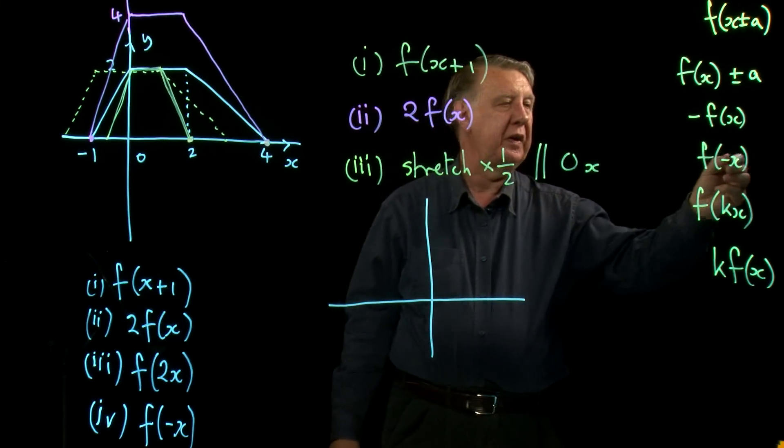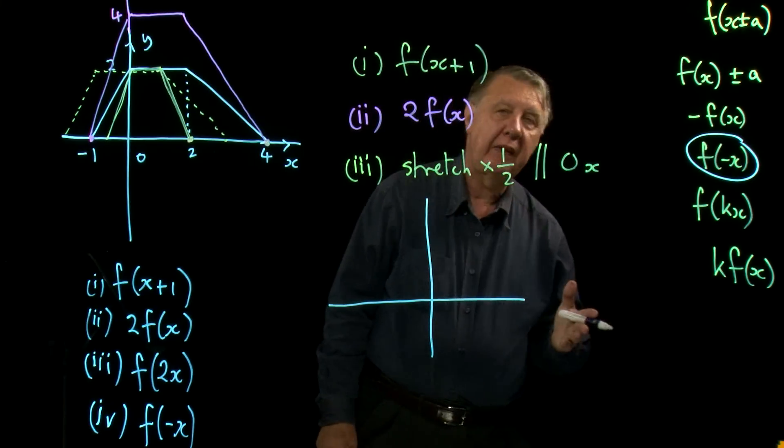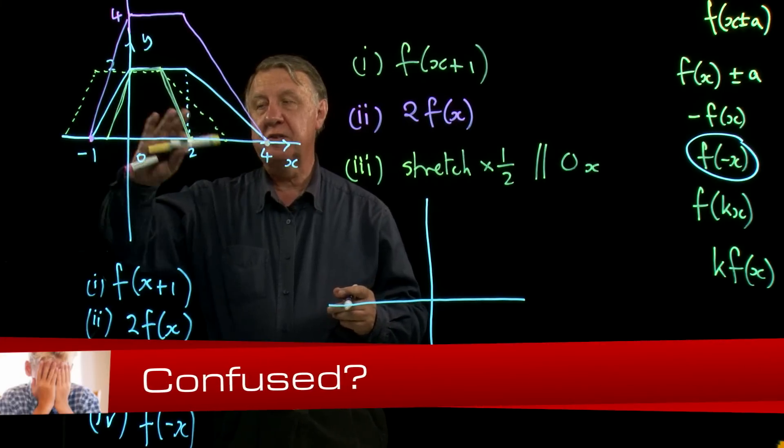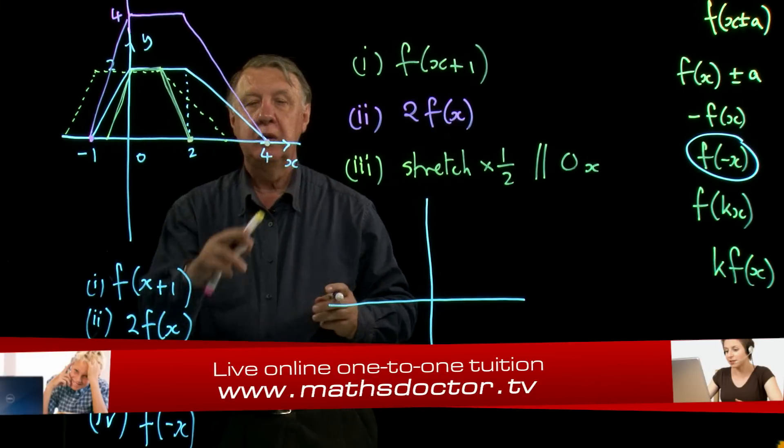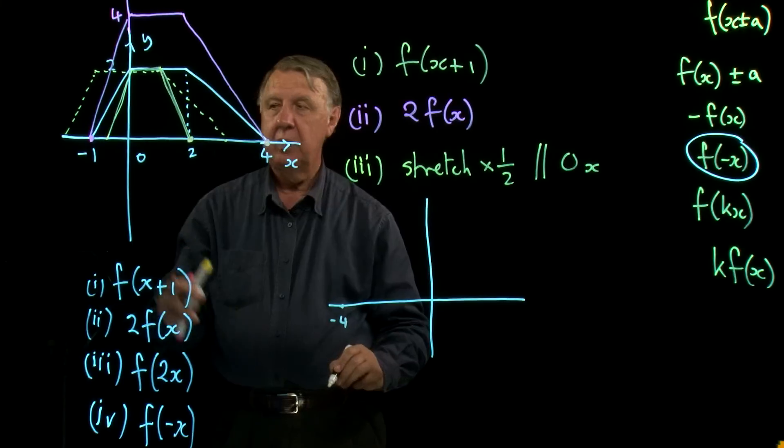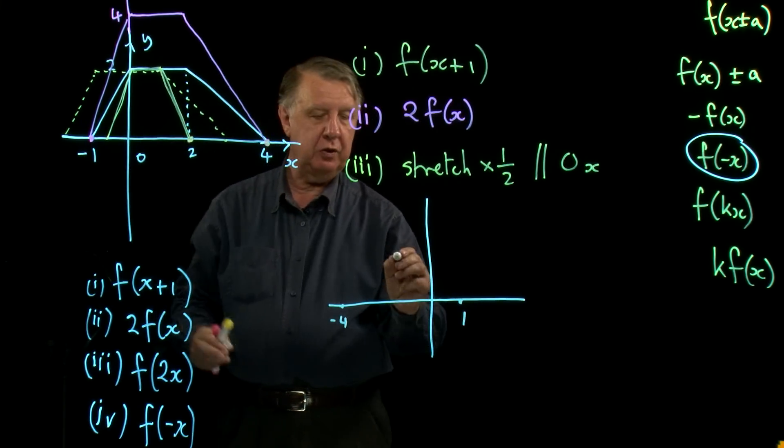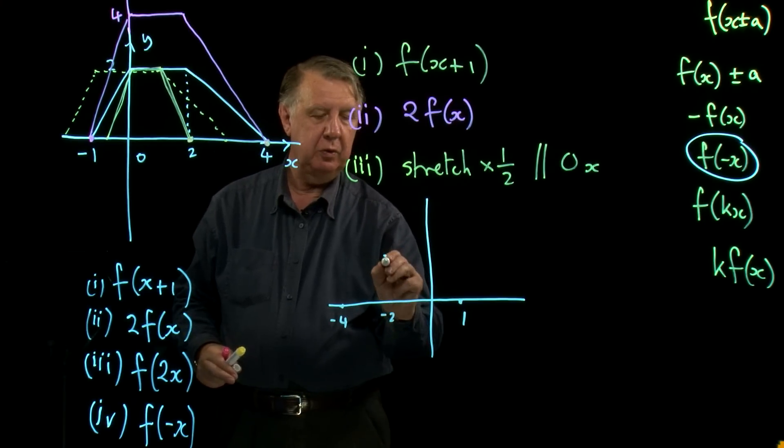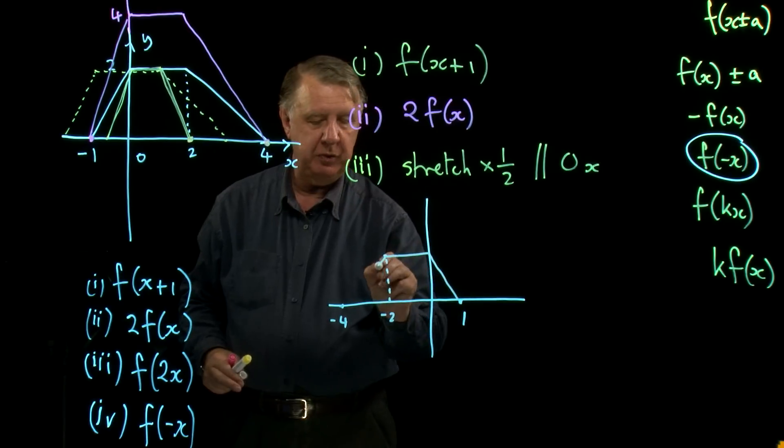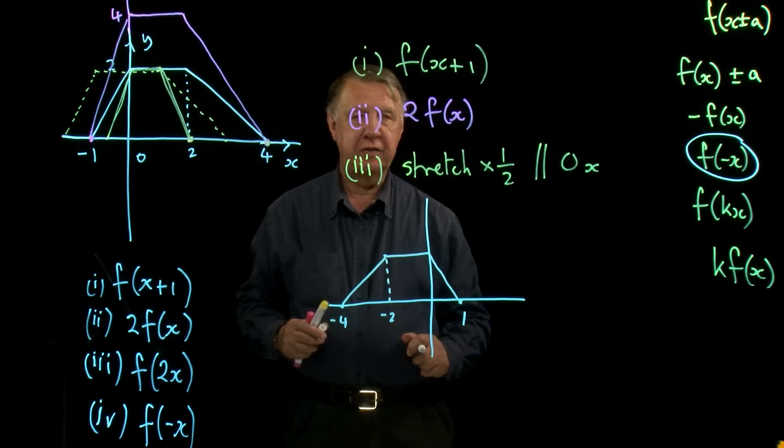Function negative x. One of these. Remember what that was? It was reflection in the y-axis. Now when you've got things that are both sides of the y-axis to start with, then they swap over. So this goes across to minus four, this goes across to one, two goes across to minus two. And then the whole graph is the mirror image in the y-axis. So therefore most of it's this side instead of the other.